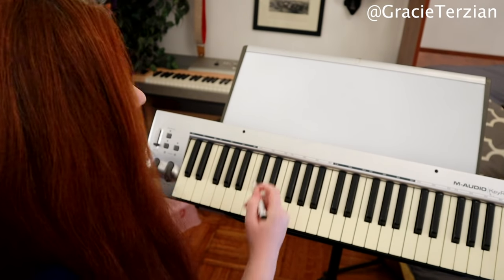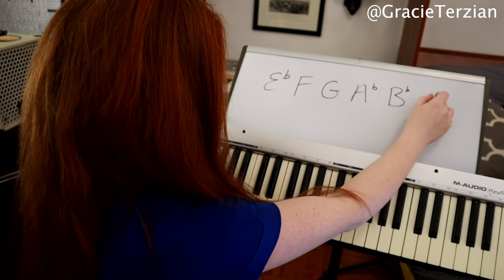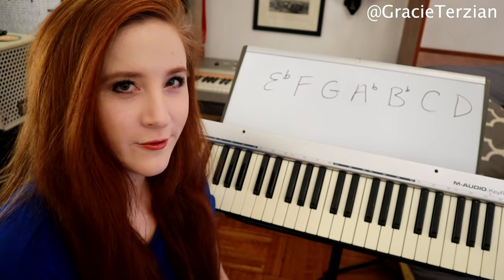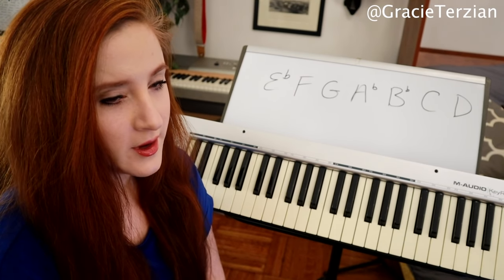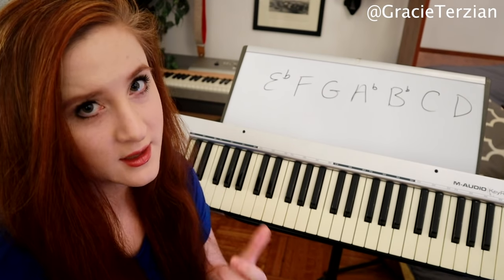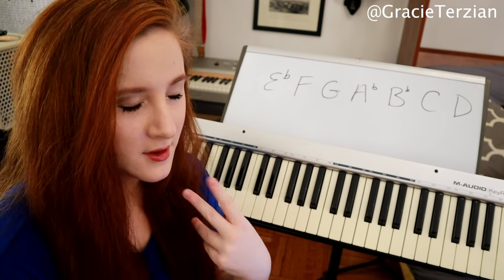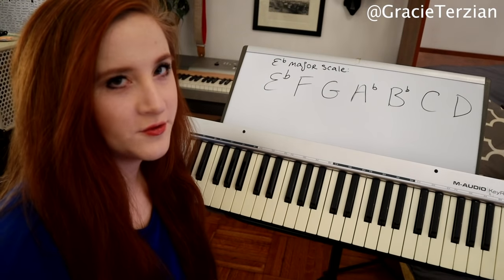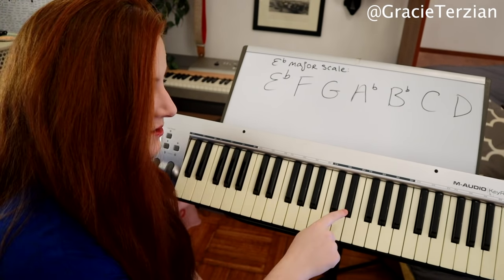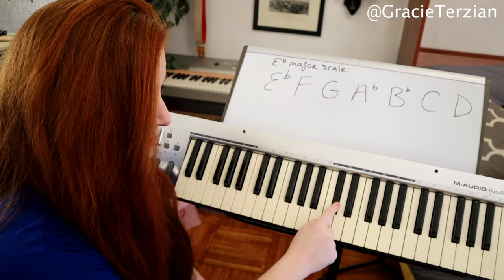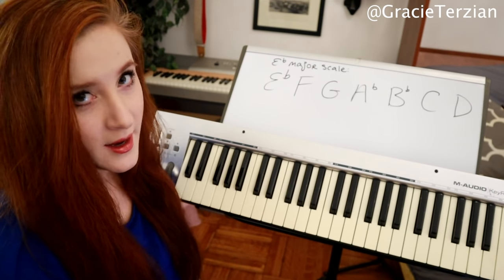What is the relative minor of E flat major? First, let's write out our E flat major scale. If you don't know how to figure out the notes in your major scale, I have a video on the circle of fifths that shows you how to create it and figure out all your major scales. So to find the relative minor key of E flat, we're going to count down three half steps in the chromatic scale from E flat — one, two, three — and I get to C. That means C minor is our relative key.